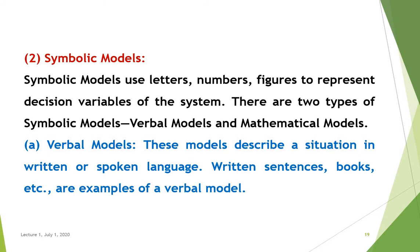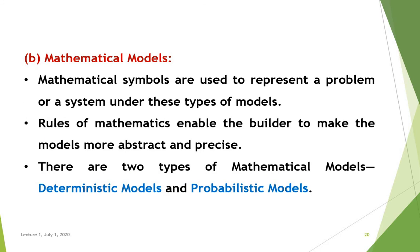Verbal models describe a situation in written or spoken language. Written sequences, books, etc. are examples of verbal models. Mathematical models use mathematical symbols to represent a problem or a system. Rules of mathematics enable the builder to make the models more abstract and precise. There are two types of mathematical models: deterministic models and probabilistic models.